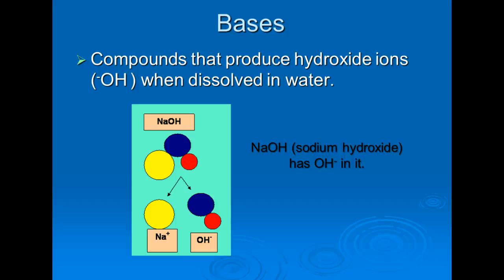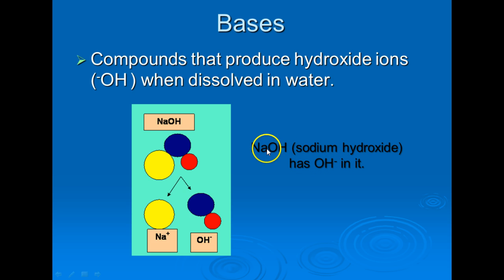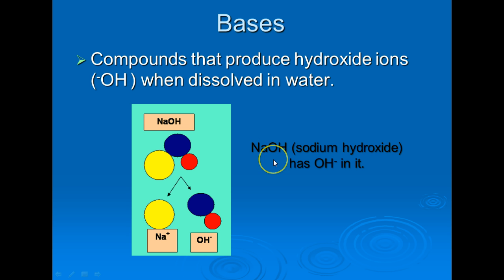Bases are compounds that produce hydroxide ions when dissolved in water. For example, sodium hydroxide (NaOH) has an OH at the end. When you put NaOH in water, the Na separates from the OH, producing a hydroxide ion. We can tell from a chemical formula if we have a base because bases end in OH.